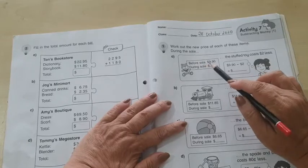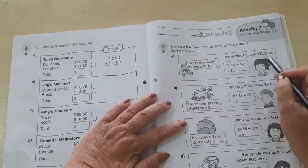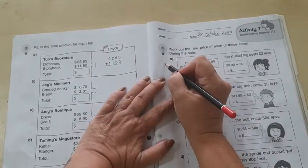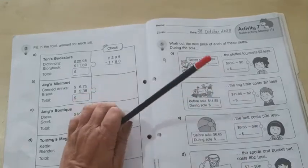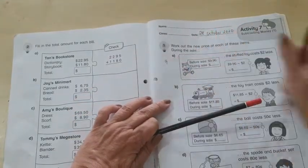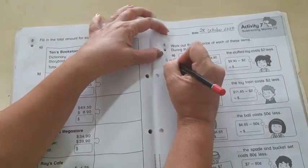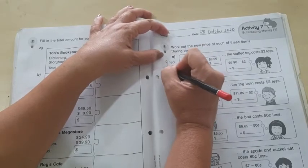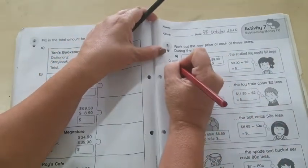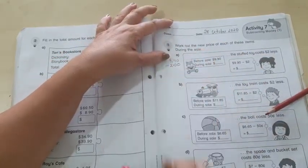So, before sale, the price was $9.90. And it is reduced by $2. Okay, so what you need to do is, $9.90 minus $2. Now, $2, you must remember, is 2.00. Okay, so that's $2. Alright. Then,